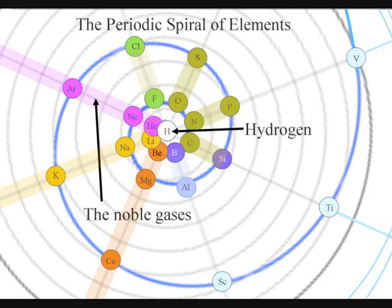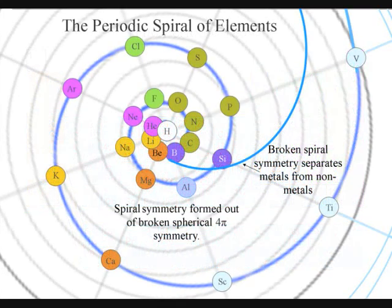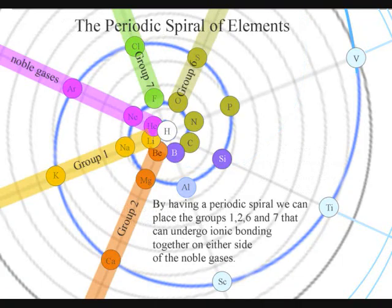In the traditional periodic table, there is a problem of where to place hydrogen and helium — they can be placed on the left-hand side because of their electron configuration, or on the right-hand side. But by placing hydrogen in the centre of a spiral, we solve this problem. Also, by having a periodic spiral, we place the groups of elements that can undergo ionic bonding together on either side of the noble gases.